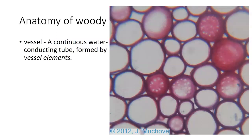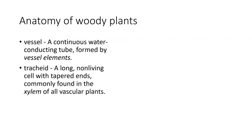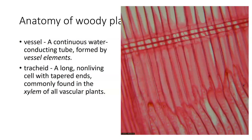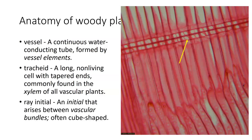The junction parts have these little sieve plates that allow for passage of material from one side to the other. We have tracheids — tracheids are long, non-living cells with tapered ends, commonly found in the xylem of all vascular plants. We also have what we call ray initials. A ray initial is a place that will give rise to material that arises between the vascular bundles. It's often cube-shaped, kind of like a reserved stem cell — it stays there and, if something gets damaged, it can start to produce new material to fill in.